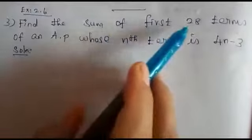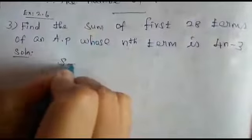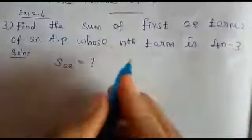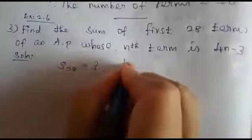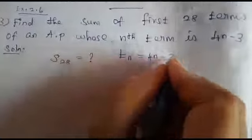We want to find S28. Sum of first 28 terms means we want to find S28. Next, what is given? The nth term is 4n minus 3. Nth term is denoted by Tn, so Tn equals 4n minus 3.